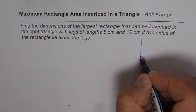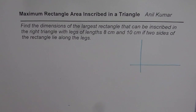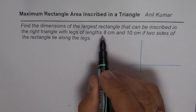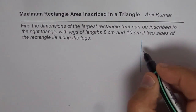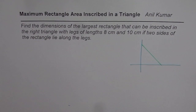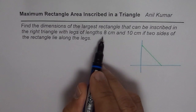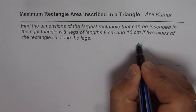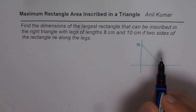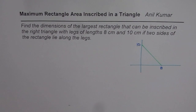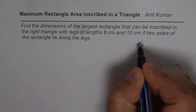Let me sketch the situation — it will be much easier to solve this way. We will take a coordinate plane to solve these questions. Let's say the two sides of the triangle are along the x and y axis. We have a right triangle where the sides are 8 and 10 cm, drawn along the axes.